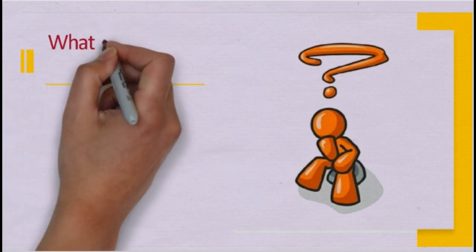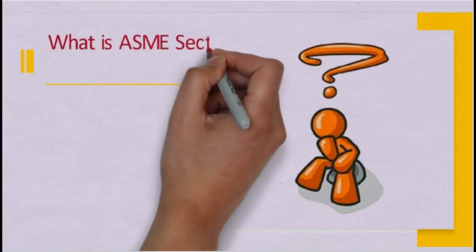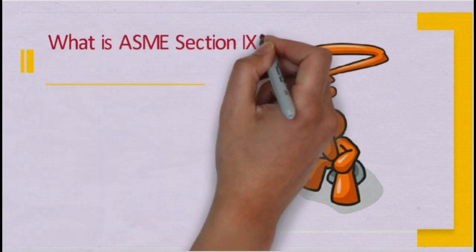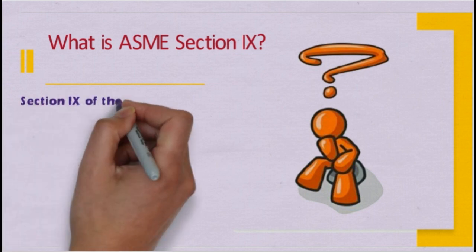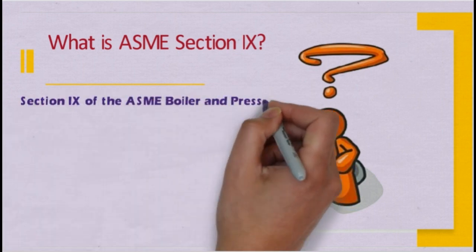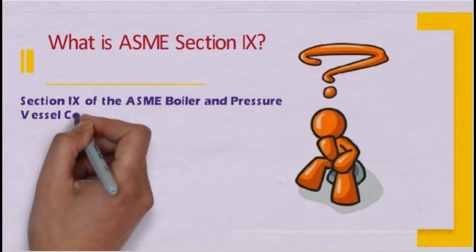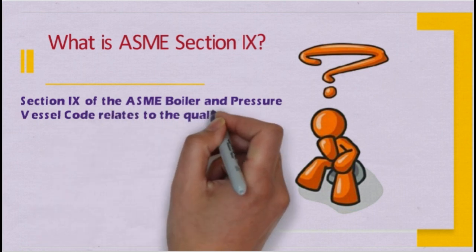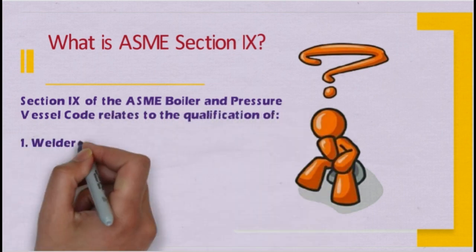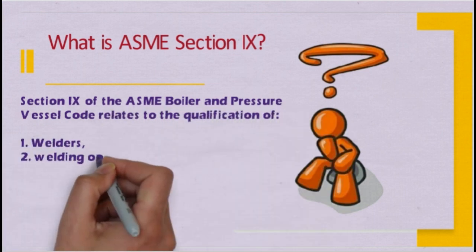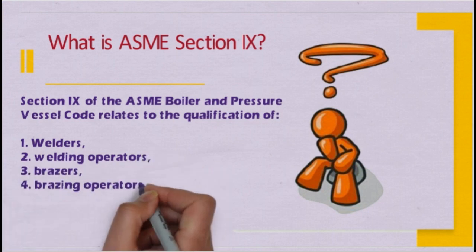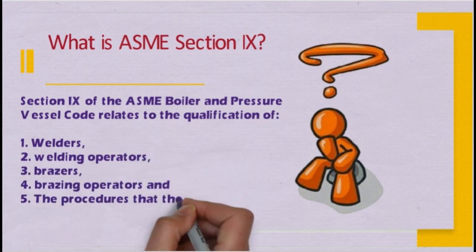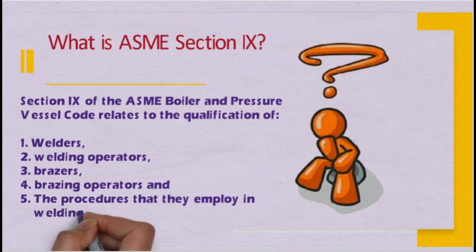So now let's know what is ASME Section 9. Section 9 of the ASME Boiler and Pressure Vessel Code relates to the qualification of welders, welding operators, brazers, brazing operators, and the procedures that they employ in welding and brazing activities.